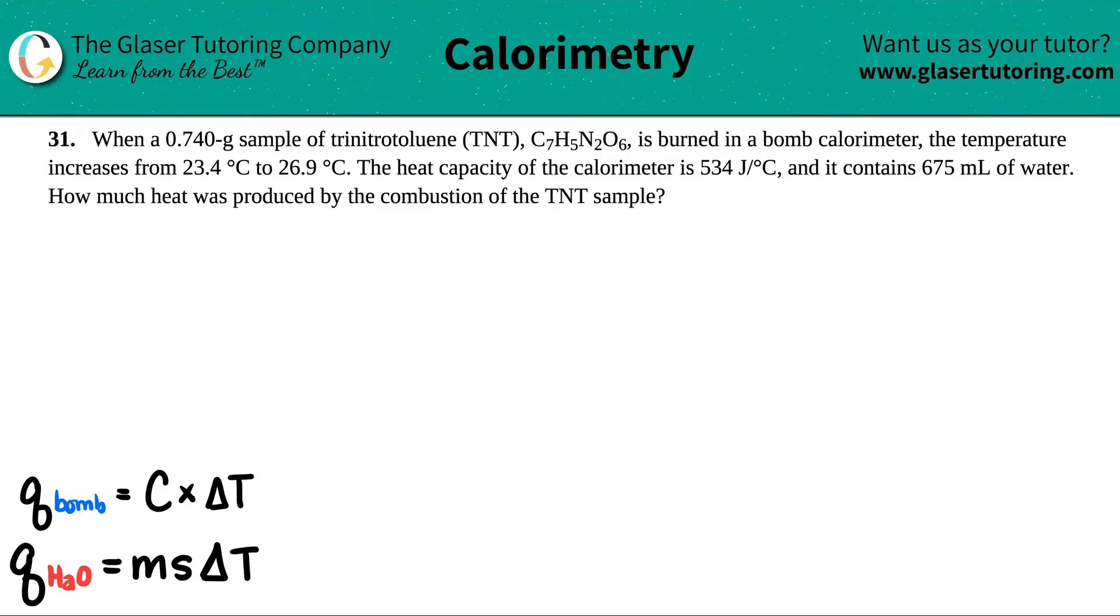Number 31. When a 0.74 gram sample of trinitrotoluene, which is TNT, so an explosive, aka C7H5N2O6, when this is burned in a bomb calorimeter,